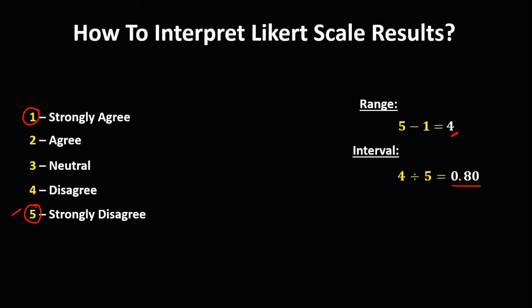Then to create the Likert scale, start with the smallest value. So we have 1.00. Then for the upper limit, from 1 plus the interval 0.80, the upper limit for the first scale is 1.80.